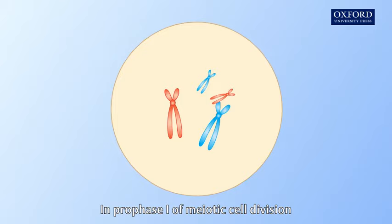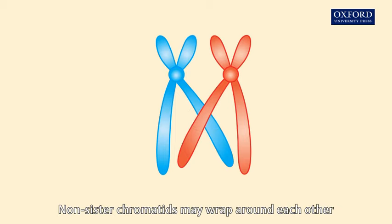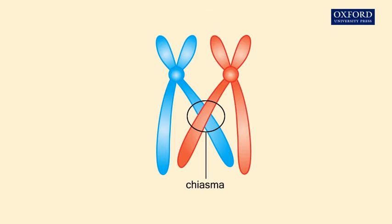In prophase 1 of meiotic cell division, homologous chromosomes pair up. Non-sister chromatids may wrap around each other, forming a cross-shaped structure called a chiasma.